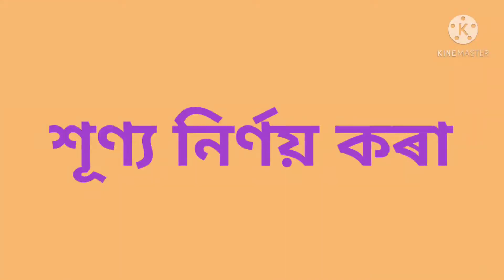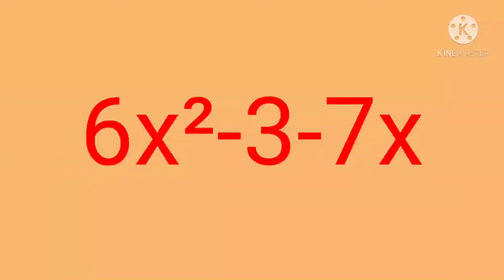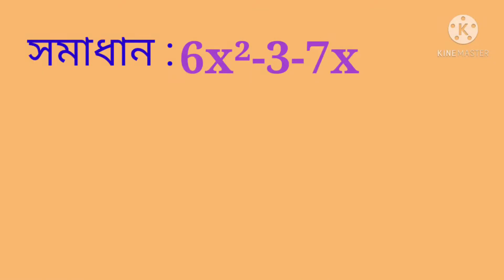Let me show you the 3 times method. I give my 2.2 records. Here I give 6x squared minus 3 minus 7x — that is, 6x squared minus 7x minus 3.